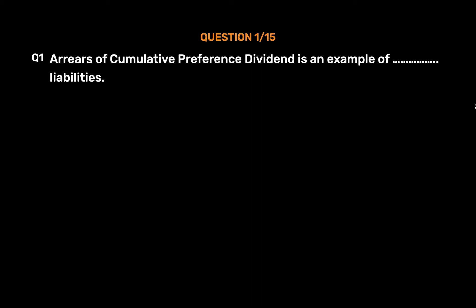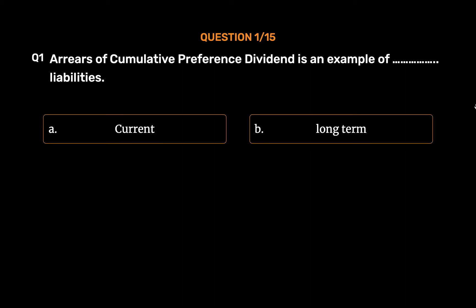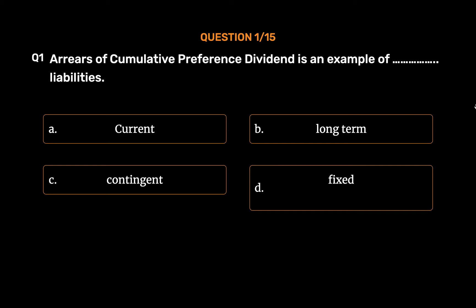Question number 1. Arrears of Cumulative Preference Dividend is an example of which type of Liabilities? Option A: Current. Option B: Long Term. Option C: Contingent. Option D: Fixed. The correct answer is Option A — Current.